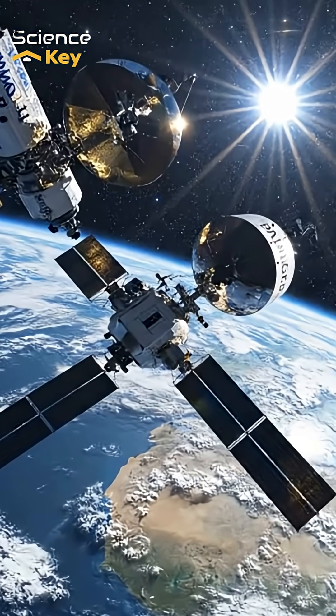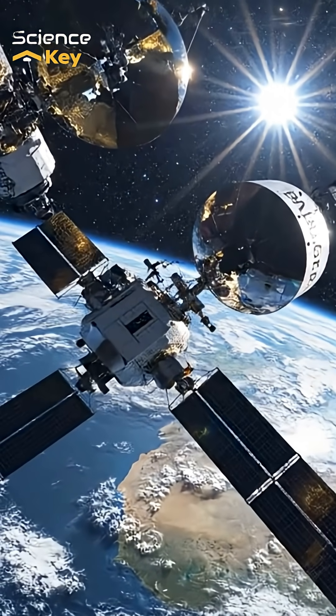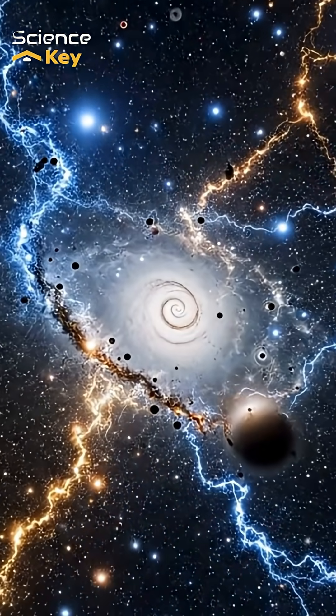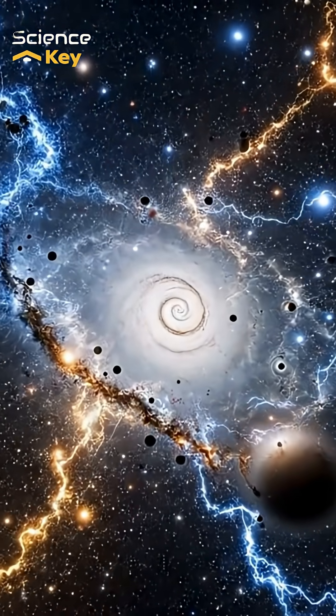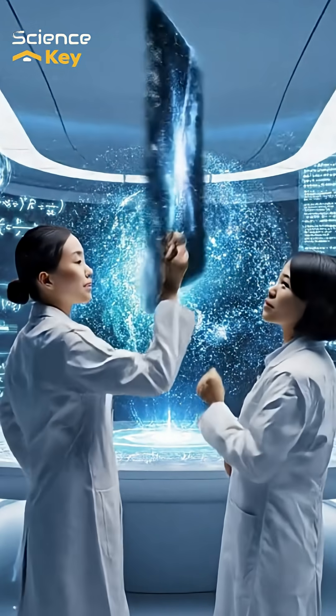NASA's WMAP and ESA's Planck satellites mapped this ancient light. It reveals minute variations, like fingerprints from the first matter in the cosmos. Those tiny fluctuations came to define everything—galaxies, stars, even us. From cosmic noise came the architecture of the universe.